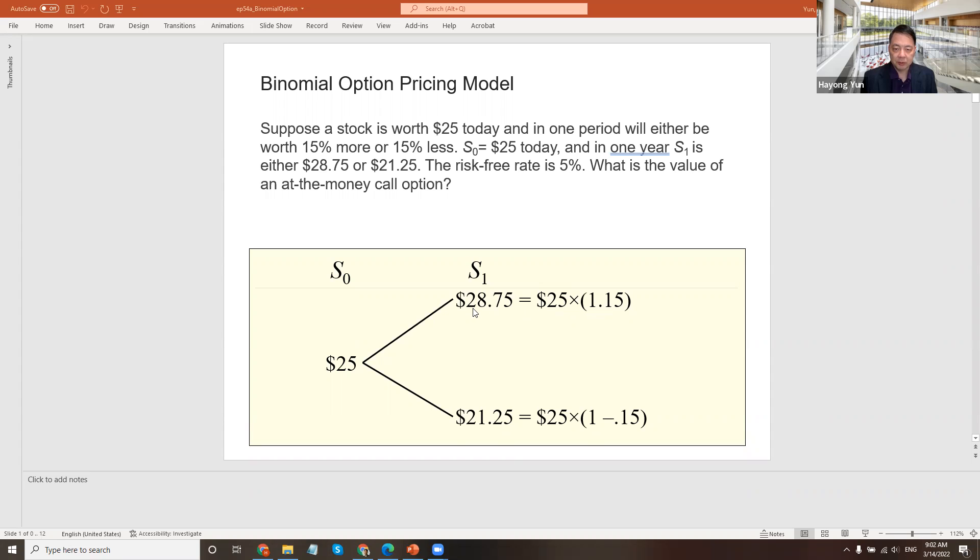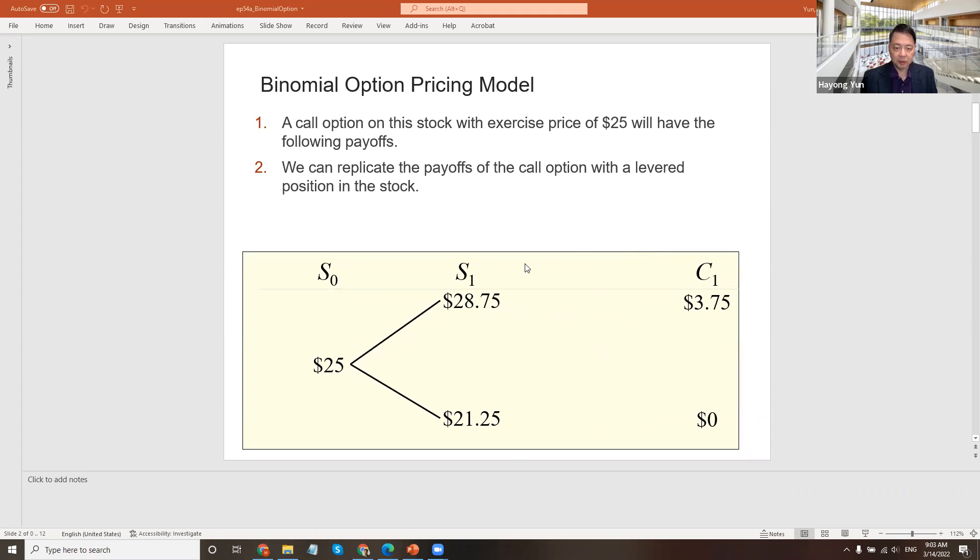The next period, it can go up 15% or go down 15%. So $25 and then 15% up is $28.75, and 15% down means $21.25. The risk-free rate is 5%. We want to find the value of an at the money call option. When the stock price became $28.75, the profit from a call option is $3.75. If it goes down below $25, you're not going to use that option, so the worst is zero.